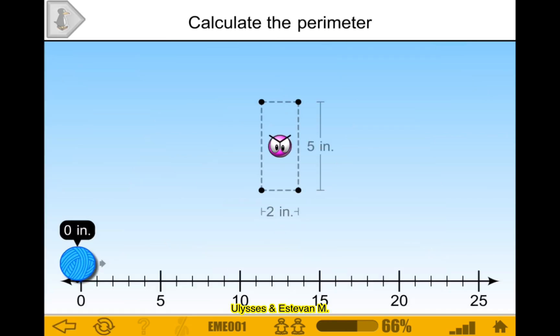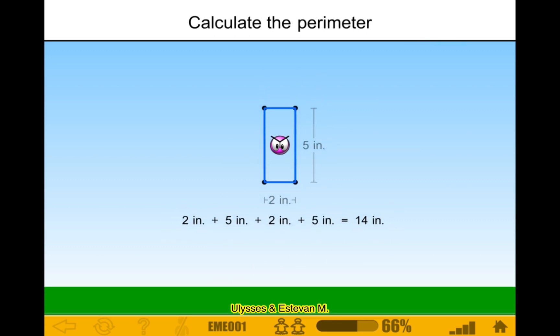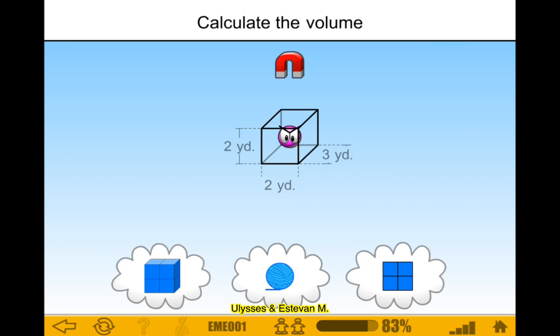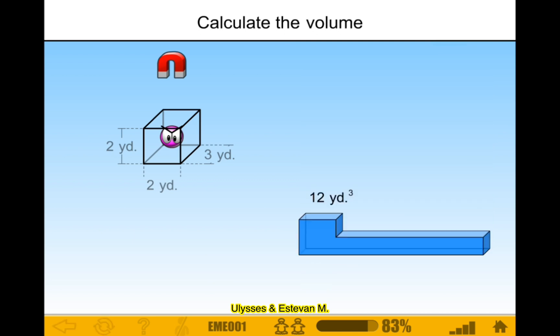I got a perimeter. I got a volume. Okay. 5... 7 times... 7 times 7 is 14. There we go. And volume. 3 times 6 is 12, and then times 12. There we go. And done.